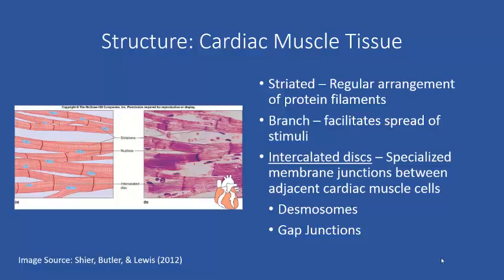One thing you'll notice about cardiac muscle tissue is that, like skeletal muscle tissue, it is striated. If you look at the micrograph and the drawing, you will see that the muscle cells have a striped appearance — that is what we refer to as striations. The striations are due to a regular arrangement of protein filaments within the cardiac muscle cell, just like in skeletal muscle.